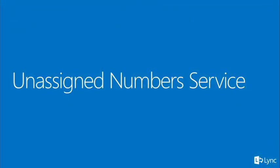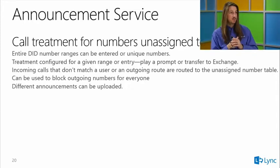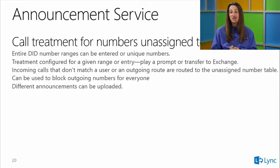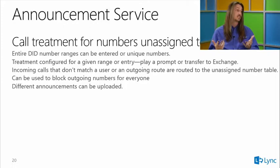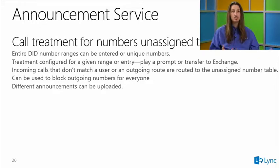The unassigned number service handles calls for numbers you own that aren't assigned to a user. One creative use: any call to a 900 premium number was intercepted, a warning message was played, and the call was forwarded to HR showing it originated from an unassigned number — enabling identification of policy violators.